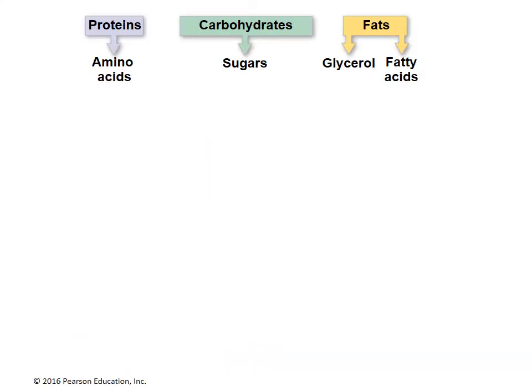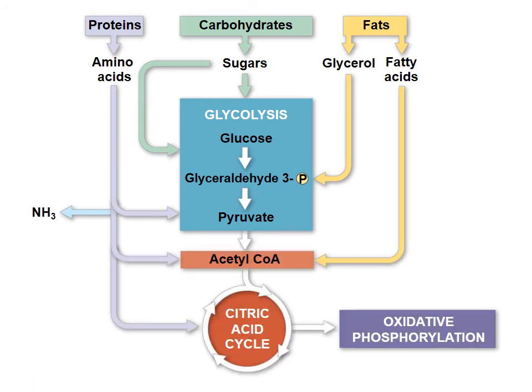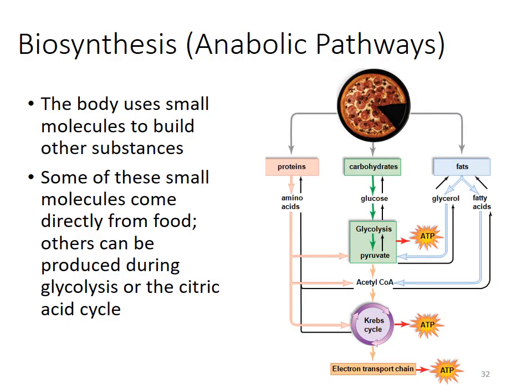There are interconvertible pools here: proteins can be broken into amino acids that feed into glycolysis, pyruvate oxidation, and the citric acid cycle; fats feed into glycolysis and pyruvate oxidation; and carbohydrates feed easily into glycolysis. If you take biochemistry or a metabolism course, you'll go into far more detail. The body also uses small molecules to build other substances — some come directly from food, others are produced during glycolysis or the citric acid cycle. For example, amino acids can be broken from proteins and then reassembled.